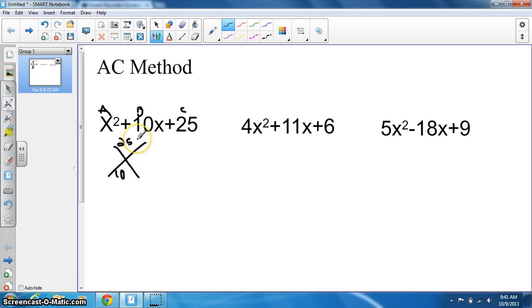Now we take our A times C and find multiples of that number that when added together give us our B term. In this case, 25 will be 5 times 5.